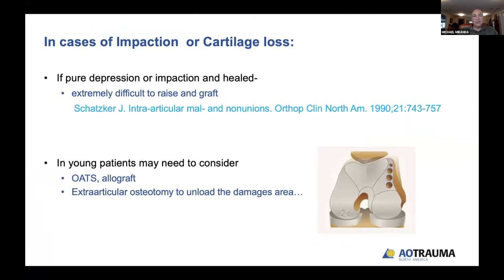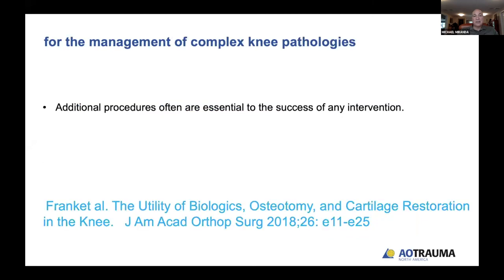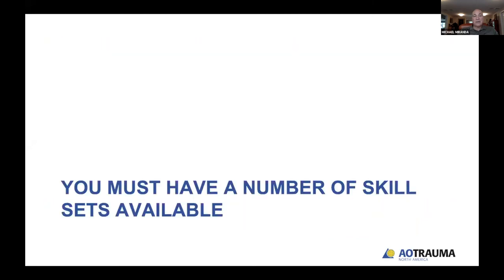Take-home from that case: a lateral approach gets excellent access to the joint — if you can't see it, you can't fix it. Articular congruity and metaphyseal continuity are key. Hardware impingement around the distal femur is always a potential issue. The impact of cartilage loss or impaction requires an extra set of skills. If it's a pure depression already healed, it's very difficult to reestablish normal articular congruity. In younger patients, consider OATS or allograft, and also consider extra-articular osteotomy to unload damaged areas.